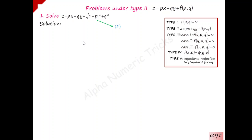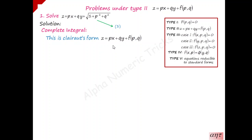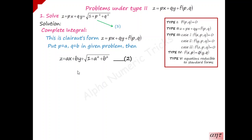Now we will find the solution. First we start with the complete integral. Before writing the complete solution, you must state which type the given problem belongs to — this is Clairaut's form: z = px + qy + f(p, q). To get the complete integral for Clairaut's form, just replace p by a and q by b in the given problem.